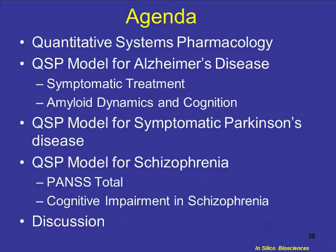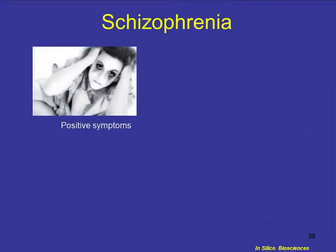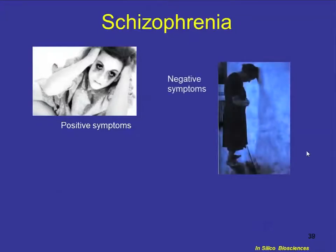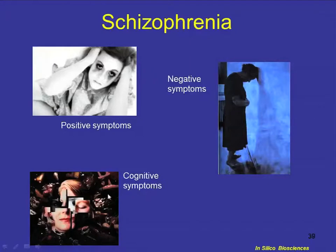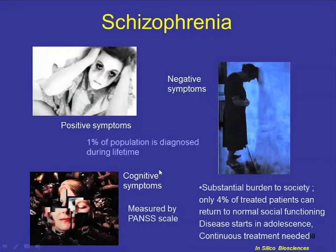Finally, let me show some examples from the model we developed for schizophrenia, which is a disease with a triplet of symptoms. There are positive symptoms — people start to hear voices and see hallucinations. There is a large contribution of negative symptoms — people become less active in social life, withdraw from friendships. And then of course cognitive symptoms — patients see the world in a distorted reality. It's a substantial burden because only 4% of treated patients can return to normal social functioning. The disease starts in adolescence, with many patients seeing first symptoms between the age of 18 and 24, and there is no cure — they need to be treated for the rest of their lives.